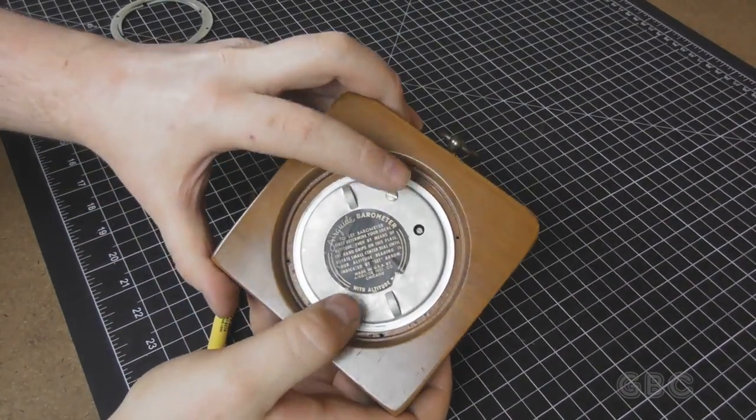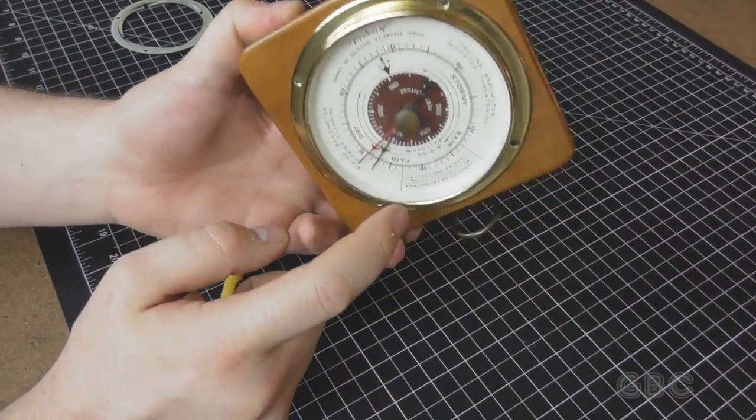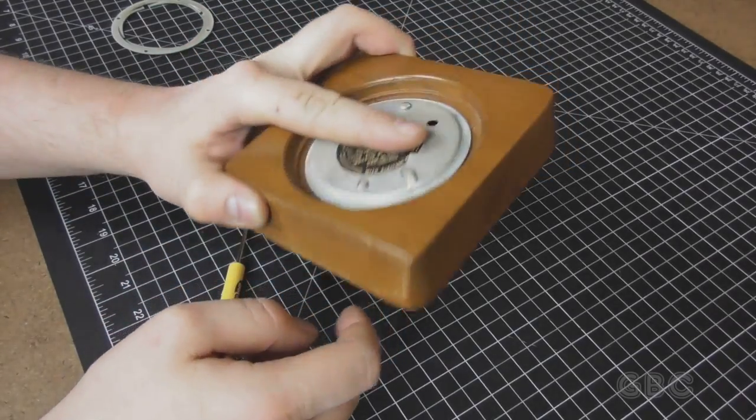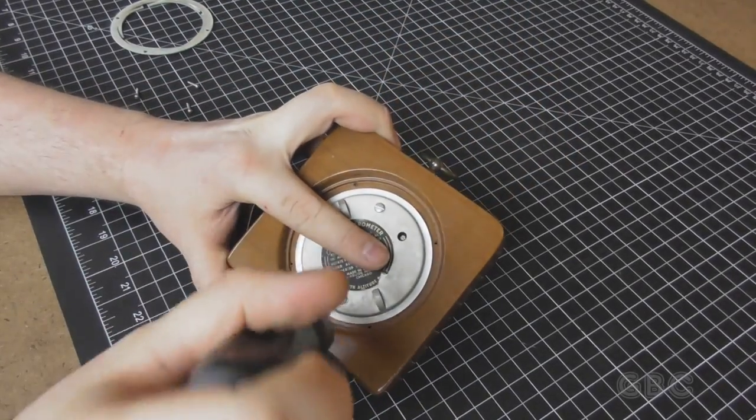I got the outer ring off. Looks like I have to take these other two screws off. As I was trying to pull it out, it was starting to bend the needle a little bit.